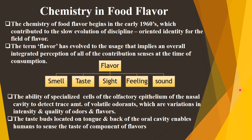The specialized olfactory epithelium cells help to detect volatile odorants in the nasal cavity. When a volatile odorant is present, it is detected as an intensity odor flavor by the olfactory epithelium cells.